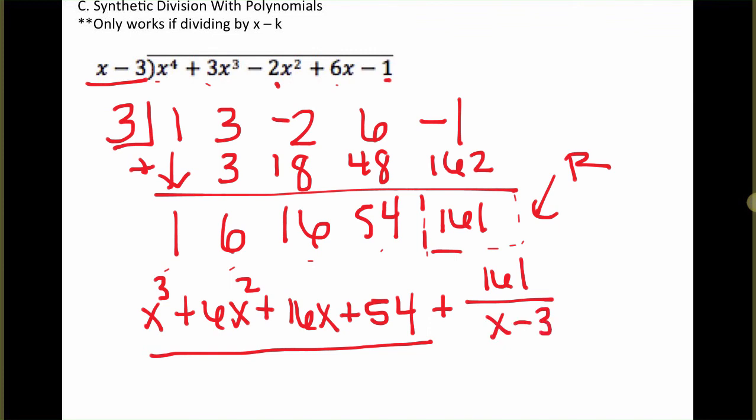Now, one special property, it's called the remainder theorem, that works well in order to check kind of the remainders and check your work in these cases. It says that if we are dividing by x minus k, we can plug that k value into this equation, and that can give us the remainder. So in this case, let's call this function f of x. If we were to plug a 3, since we're dividing by x minus 3, into that equation, we should get 161.